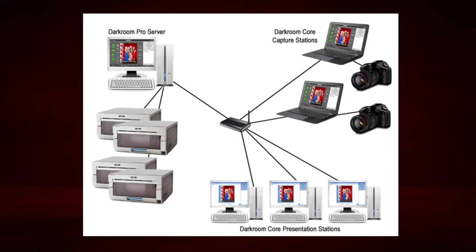This gives you one illustration of what you can do with core and pro combined to really ramp up production. You can add more presentation stations since you can typically shoot faster than people can view and place orders. Each capture station needs a separate individual copy of core — one copy of pro and one copy of core for each additional client station. If you buy them all at once, discounts can be applied.